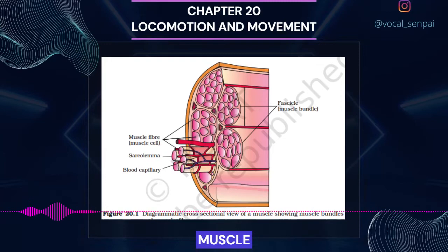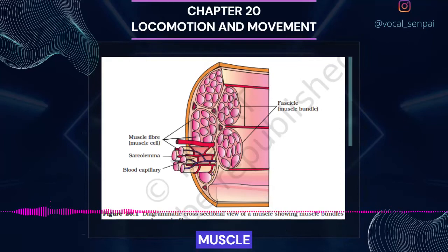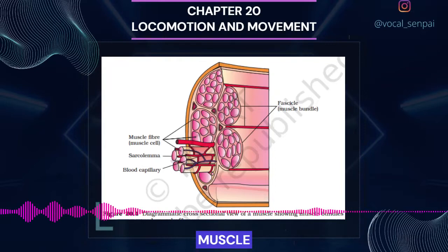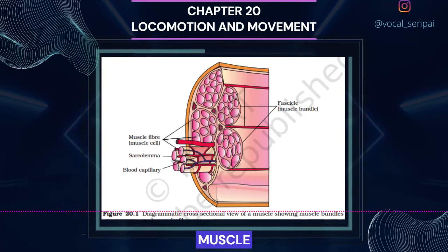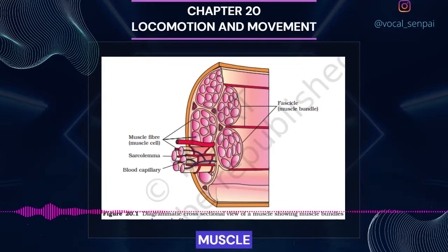Muscles have been classified using different criteria, namely location, appearance and nature of regulation of their activities. Based on their location, three types of muscles are identified: skeletal, visceral and cardiac. Skeletal muscles are closely associated with the skeletal components of the body. They have a striped appearance under the microscope and hence are called striated muscles. As their activities are under the voluntary control of the nervous system, they are known as voluntary muscles. They are primarily involved in locomotory actions and changes of body postures.